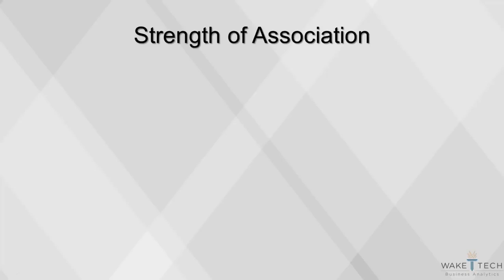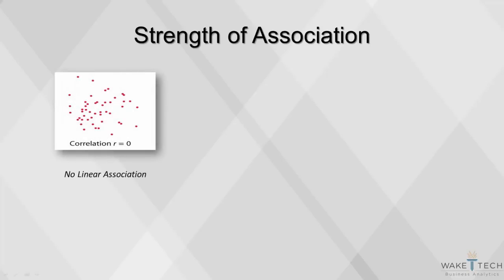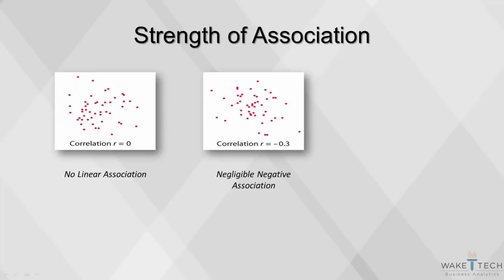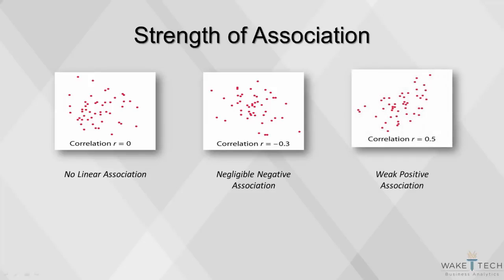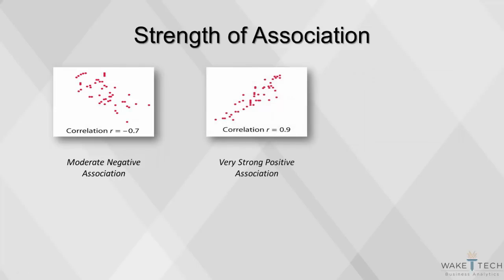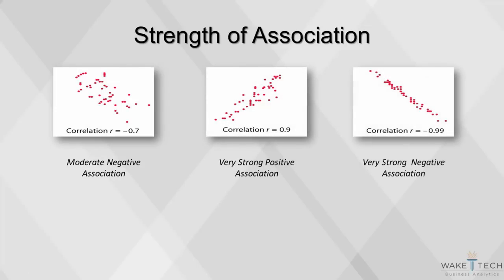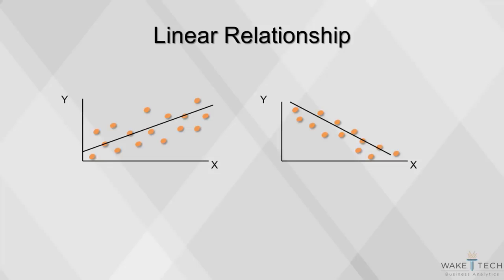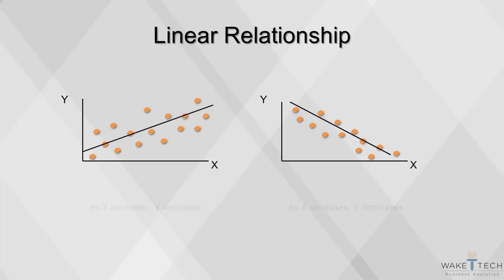Here are some examples: no linear association, negligible negative association, weak positive association, moderate negative association, very strong positive association, very strong negative association. In these scatter plots, what is happening to y as x is increasing? An important point to remember is that correlation is a measure of linear association.